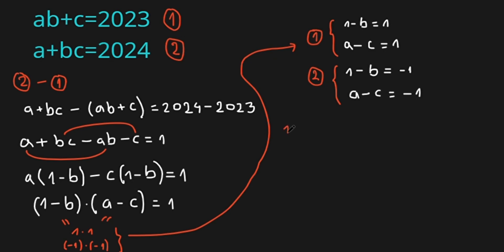So from the first case, B is 0, and from this C is 2023. And from the second one, A is 2024. So this is our first solution.